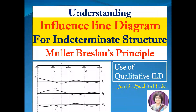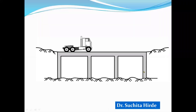In case you haven't seen the previous part, I suggest you first watch that part so you will understand this session better. In the previous part, we saw that in the case of a moving load, the values of support reactions, bending moment, shear force, etc. keep changing for various positions of the load. The influence of this moving load on various design parameters is studied using the influence line diagram.